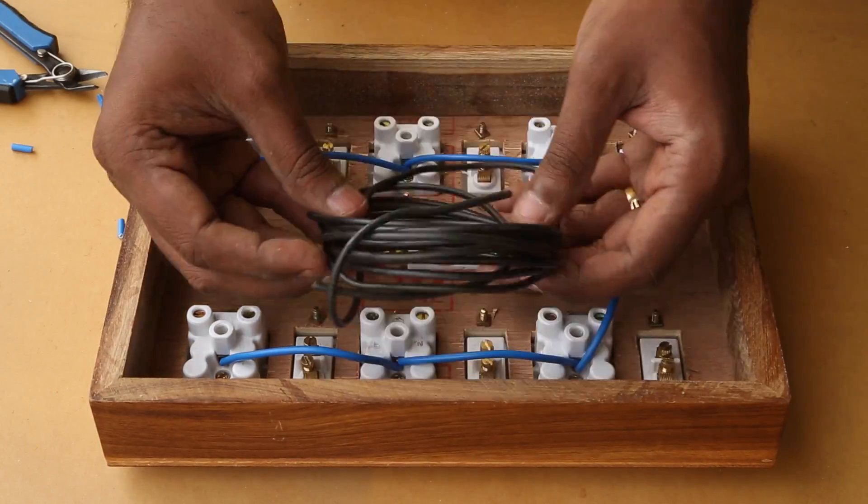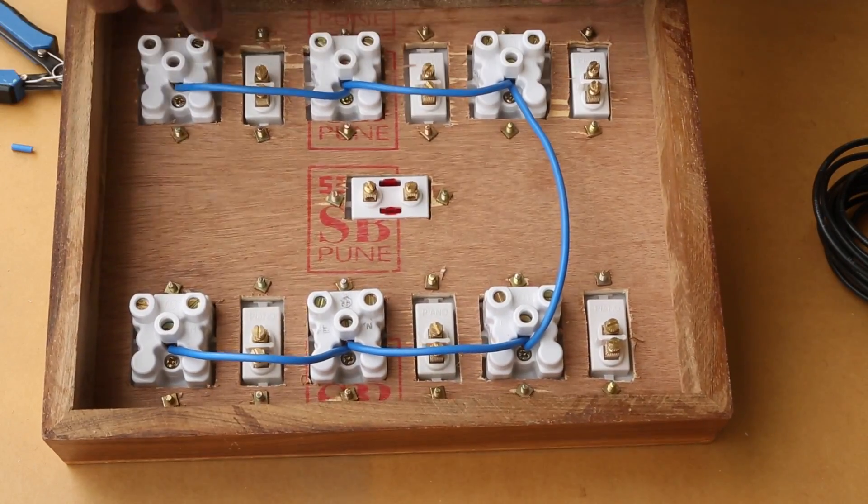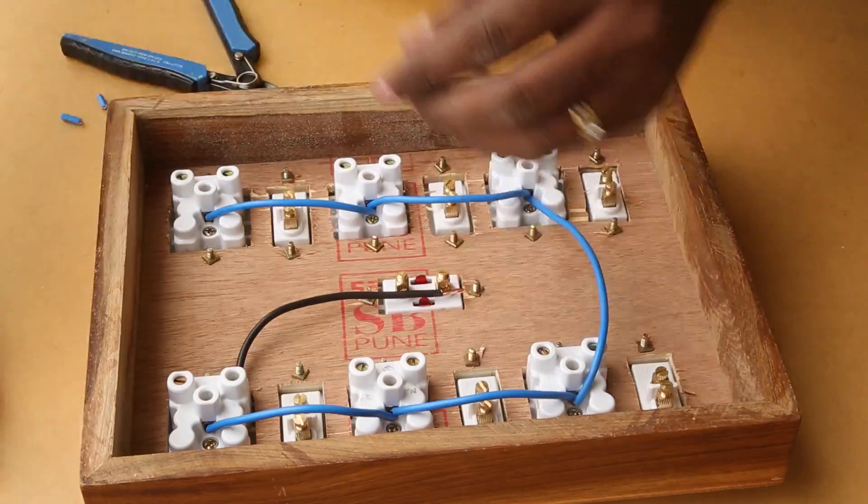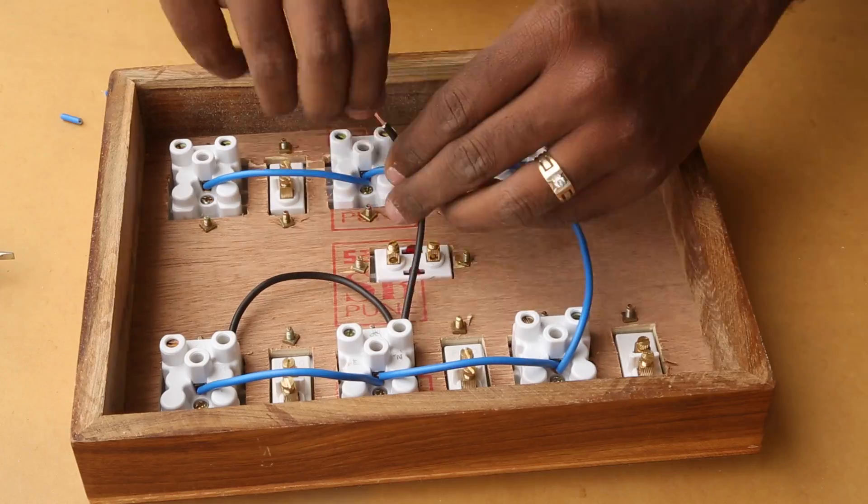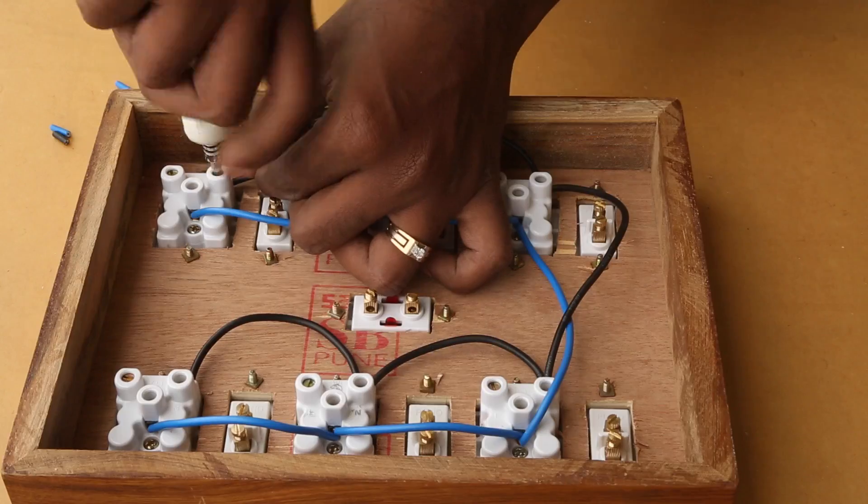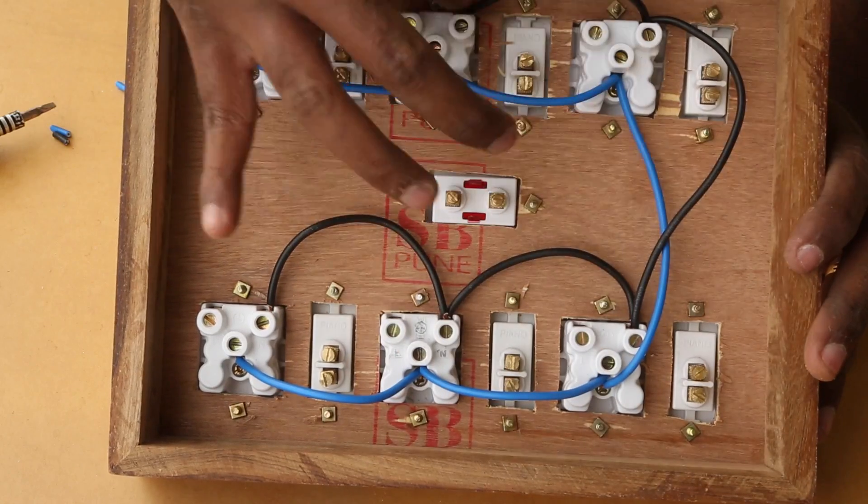Now I take this black wire and will connect all the neutral together in each socket and here is all the neutrals connected in parallel.